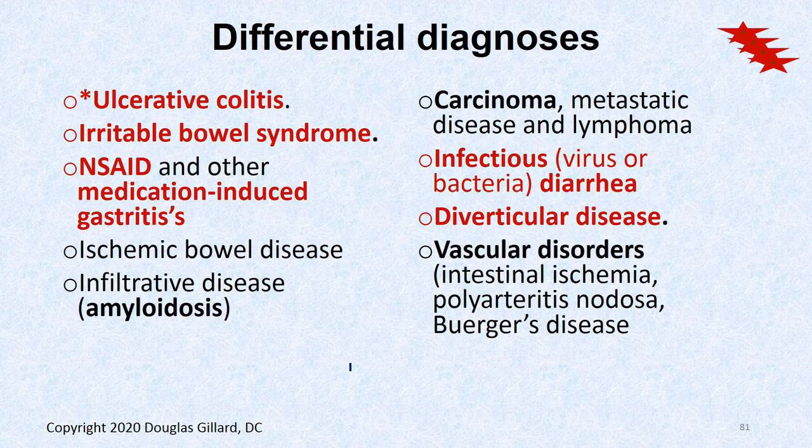Differential diagnosis for the triad of diarrhea, abdominal pain, and weight loss includes: ulcerative colitis (top of the list), irritable bowel syndrome, diverticular disease, carcinoma, medication side effects, ischemic bowel disease from embolism in the superior or inferior mesenteric artery, infiltrative diseases like amyloidosis, infectious etiologies, and vascular disorders like Buerger's disease.